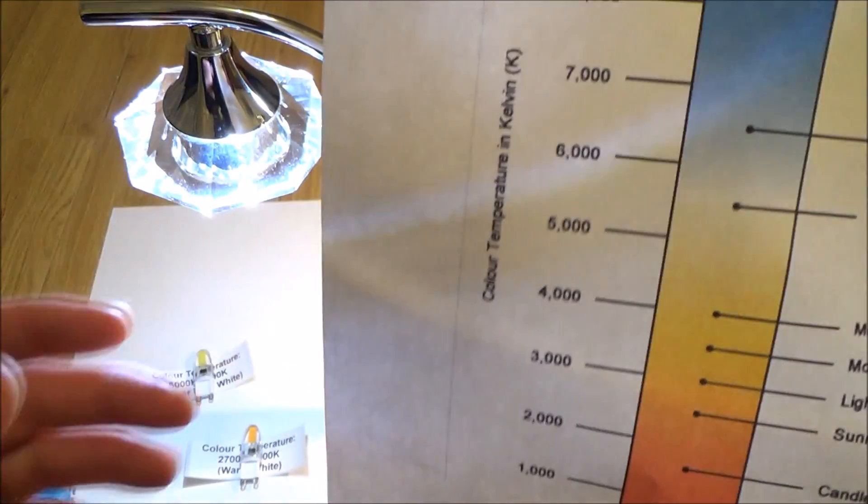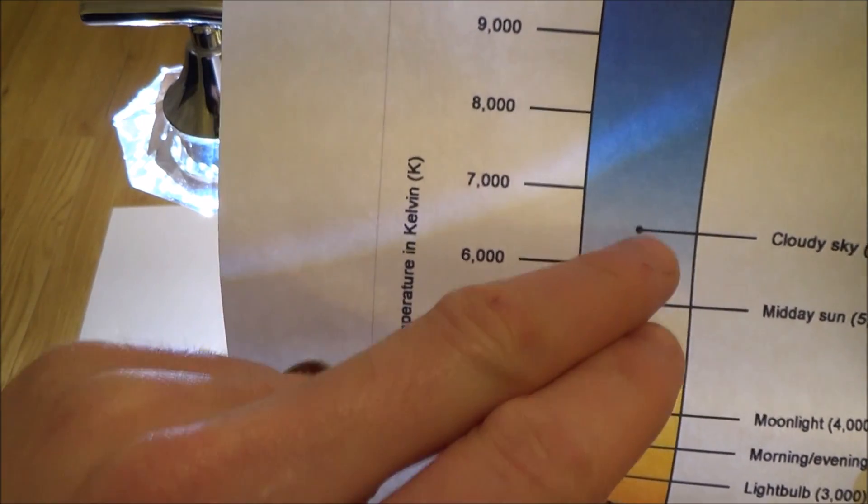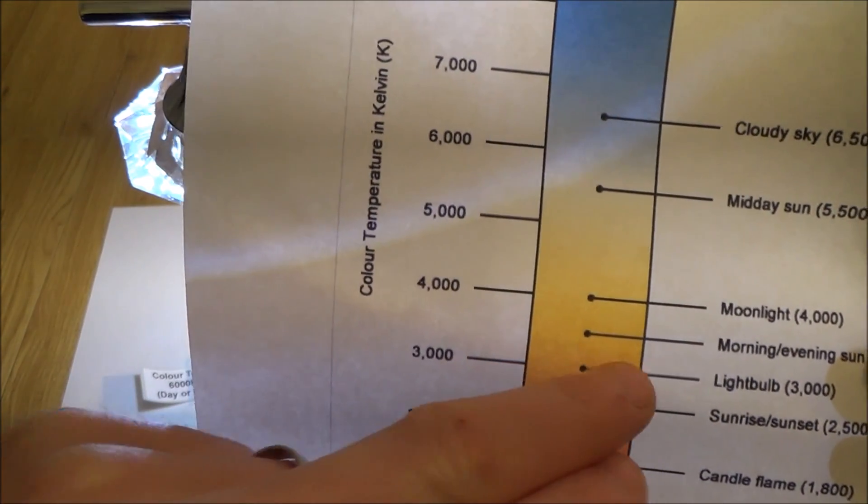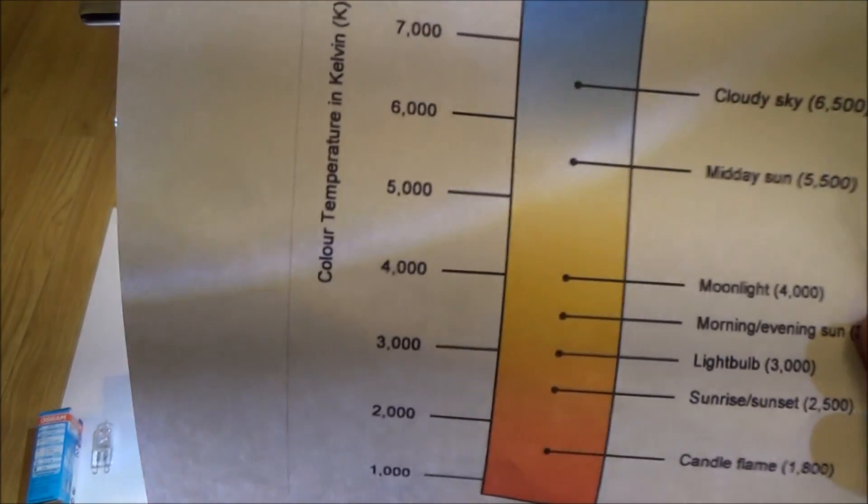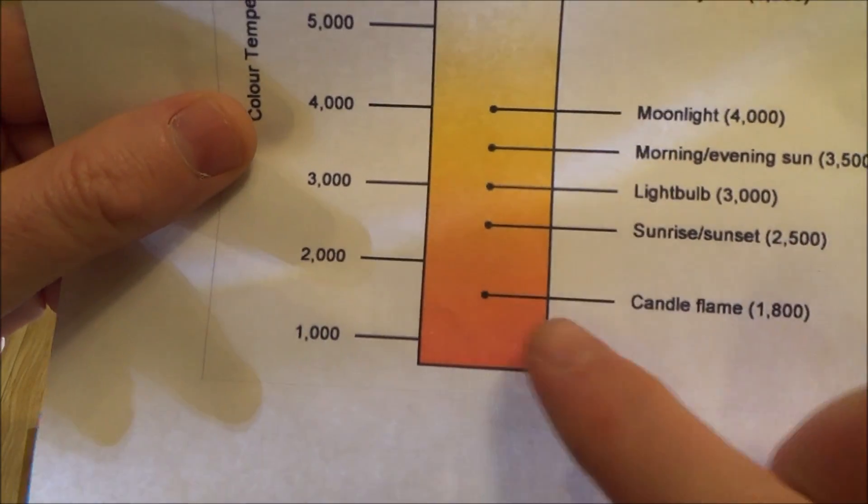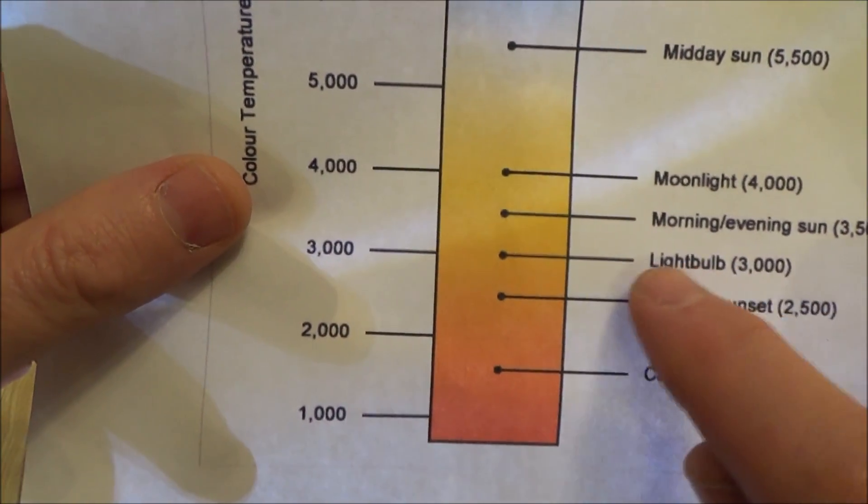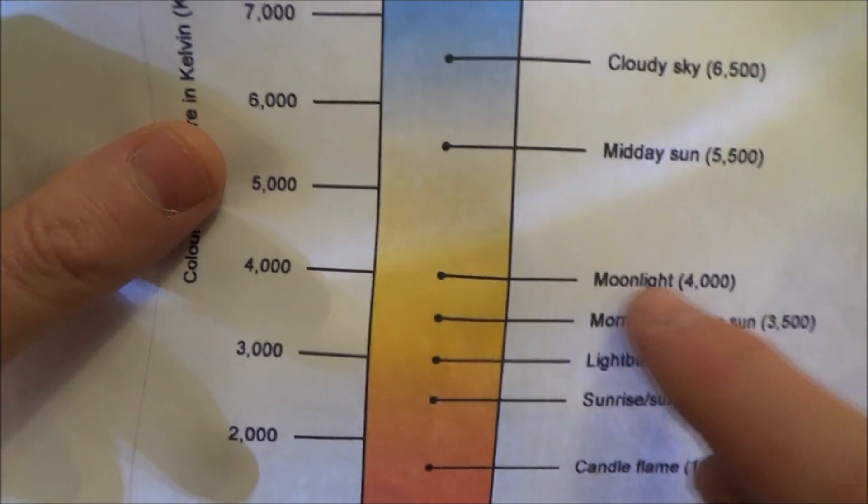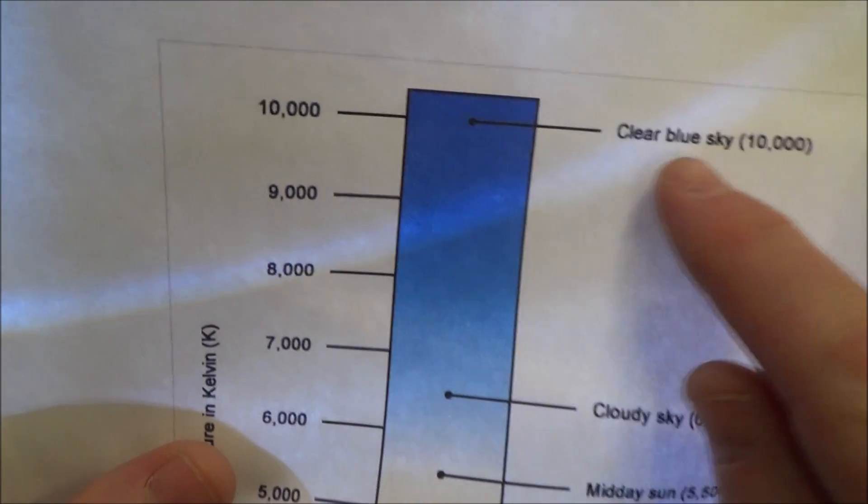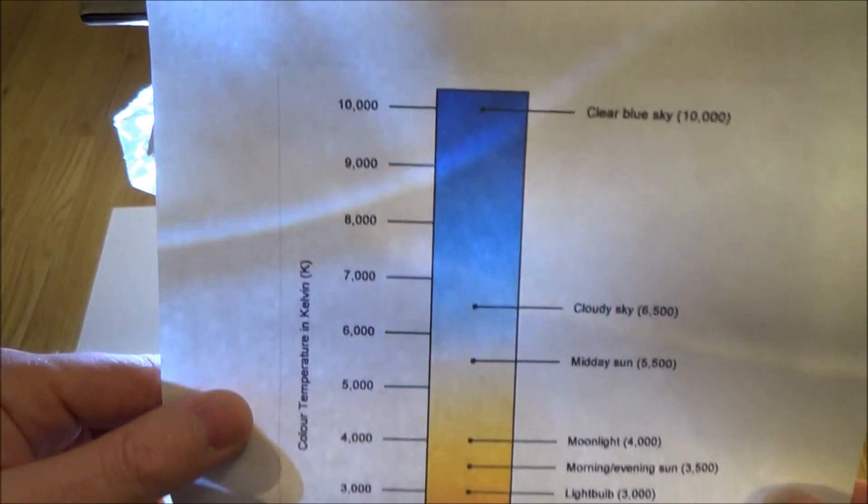So when you see the color there's no arguing. If somebody's selling you a 6000K light you know it's going to be white bordering on the blue. If somebody's selling you a 3000K light you know it's going to be a nice warm color similar to what the incandescent light bulbs used to be years ago. So for example: candle flame 1800, sunrise and sunset 2500, the old-fashioned incandescent bulbs 3000, and then as you go up you've got moonlight 4000, midday sun 5500, cloudy sky 6500, clear blue sky 10,000. So that's just a rough guide of what the different colors are.